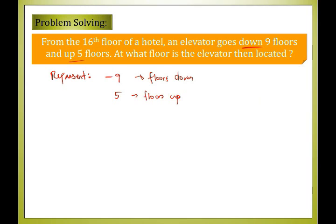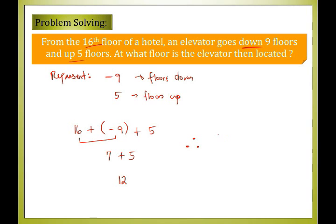We construct the equation: start from the 16th floor — 16 plus negative 9 plus 5. First, 16 plus negative 9: since they have unlike signs, we get 16 minus 9 equals 7, and since 16 is greater and positive, we have positive 7. Then positive 7 plus 5 equals 12. Therefore, the elevator is located on the 12th floor.